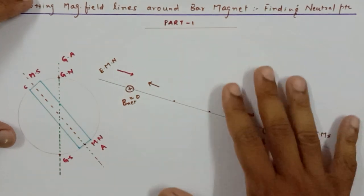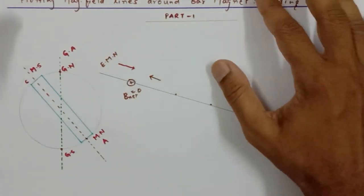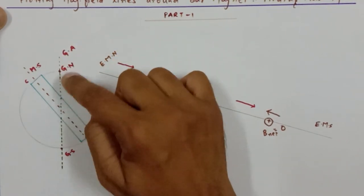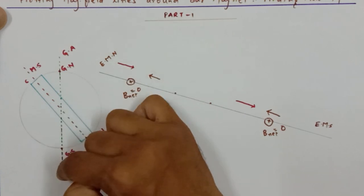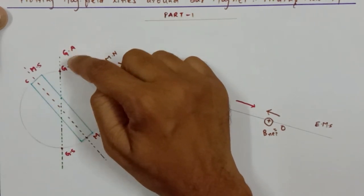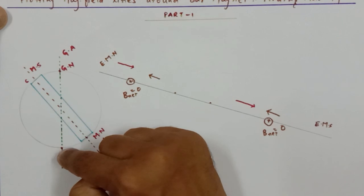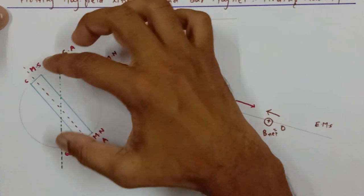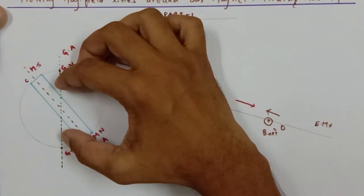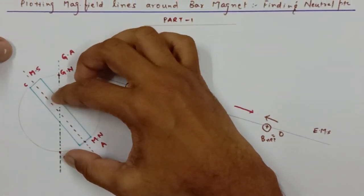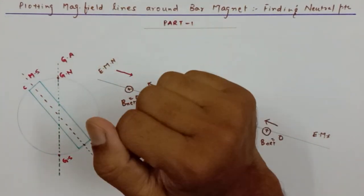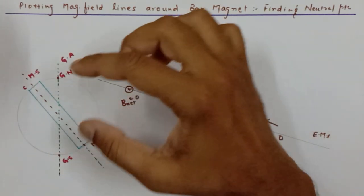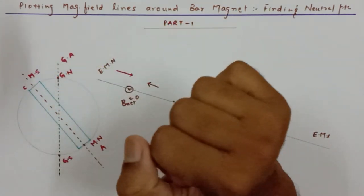Here I have a model of the earth. A line passing through the north and south is called the geographic axis. This point on the earth is called geographic north and this point is called geographic south. The center of the earth, called the core, is made up of molten metals like iron, chromium, and nickel.